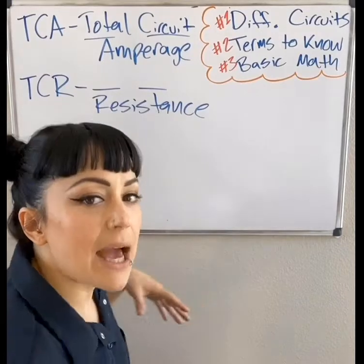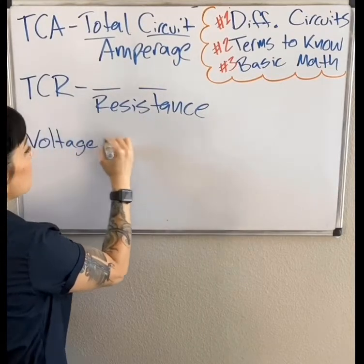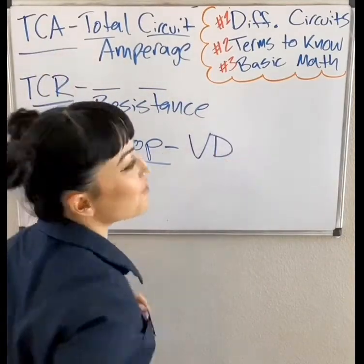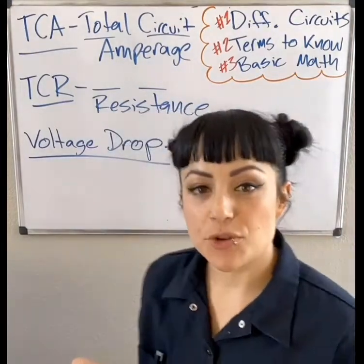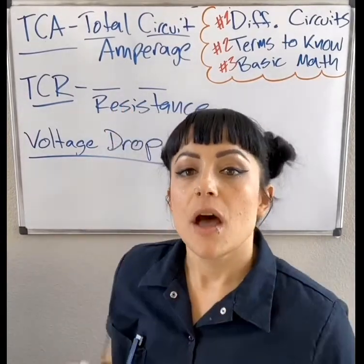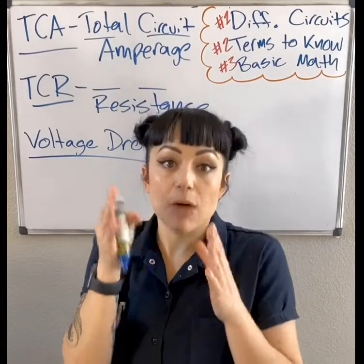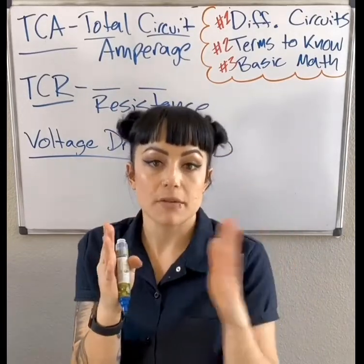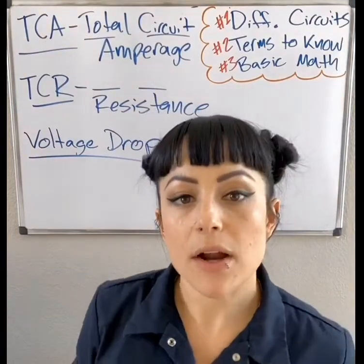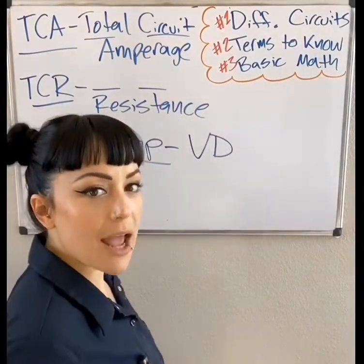One last term I want to get into is voltage drop, which I'll refer to as VD. Voltage drop refers to how much voltage was used up between two points. So if I'm asking for the voltage drop of a light bulb, I want to know how much voltage is going in and how much is being used up between the front and the back of that light bulb. Now that we know TCA, TCR, and voltage drop, let's play around with some numbers — it's not near as hard as it may seem.